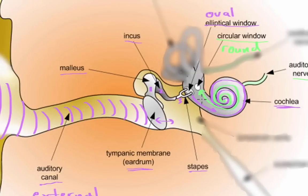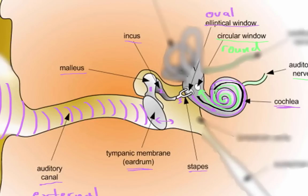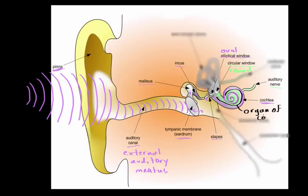The reason the fluid doesn't move back to the oval window is because in the very middle of the cochlea is a membrane running along its length. This membrane is known as the organ of Corti, which is composed of two parts: the basilar membrane and the tectorial membrane.